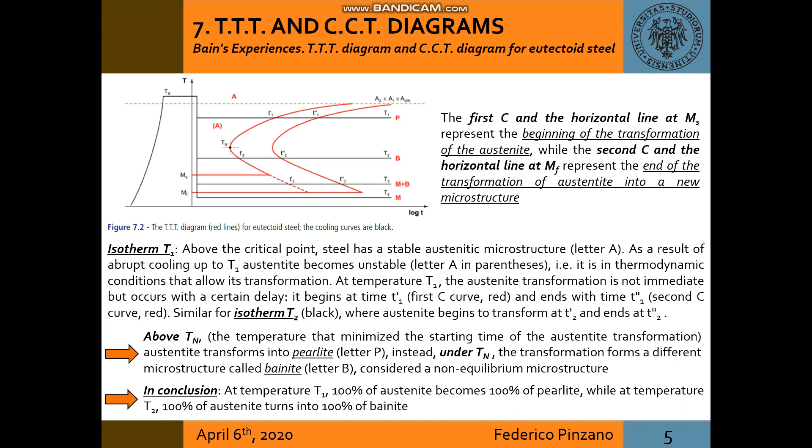Let's consider isotherm T1. Above the critical point, steel has a stable austenitic microstructure. As a result of abrupt cooling up to T1, austenite becomes unstable, so it is in thermodynamic conditions that allow its transformation. At temperature T1, the austenite transformation is not immediate but occurs with a certain delay. It begins at time T1 first and ends at T1 second. Similar is for isotherm T2, where austenite begins to transform at T2 first and then at T2 second.